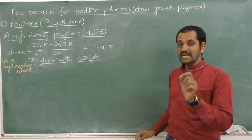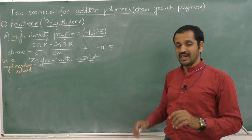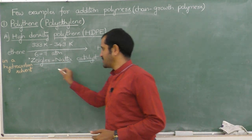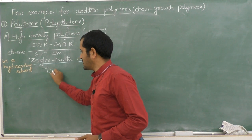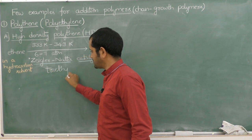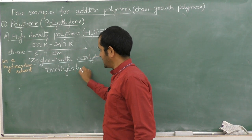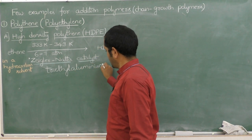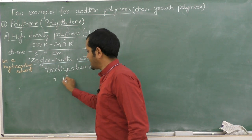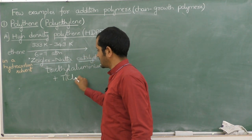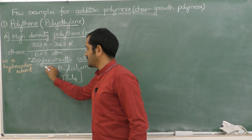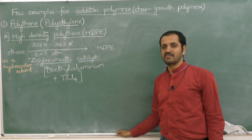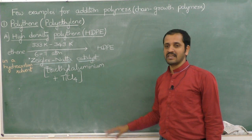The Ziegler-Natta catalyst is a mixture of triethyl aluminium along with titanium tetrachloride. This combination of triethyl aluminium and titanium tetrachloride is what we call the Ziegler-Natta catalyst.